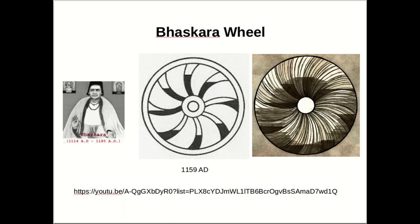The earliest documented design of such a machine is due to the Indian mathematician Baskara in 1159 AD, and it is called the Baskara wheel. This wheel contains curved reservoirs — small containers partially filled with mercury. His reasoning was that as the wheel rotates, the mercury always flows to the bottom of each reservoir. If the shape is designed properly, one half of the wheel always has more mercury than the other, and the weight imbalance can keep the wheel rotating forever.